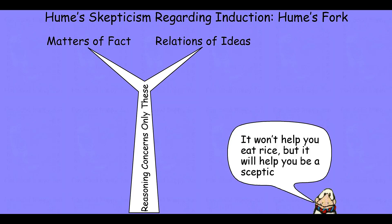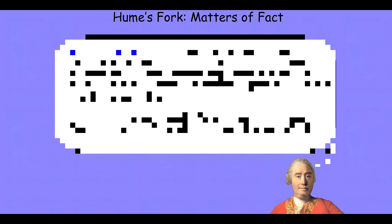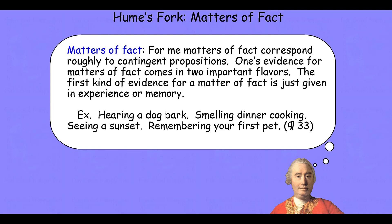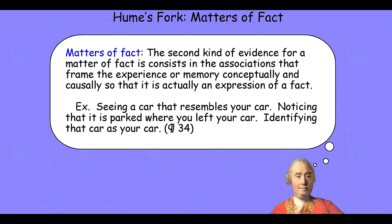It won't help you eat rice, but it will help you be a skeptic. Let's take a look at each of the prongs of our fork in a little more detail. We'll start with matters of fact. For Hume, matters of fact correspond roughly to contingent propositions. One's evidence for matters of fact comes in two important flavors. The first kind is just given an experience, intuition, or memory — hearing a dog bark, smelling dinner cooking, seeing a sunset, remembering your first pet. All of these are bits of experience or memory that are evidence for matters of fact. The second kind of evidence consists in the associations that frame that experience or memory conceptually and causally, so that it is actually an expression of a fact.